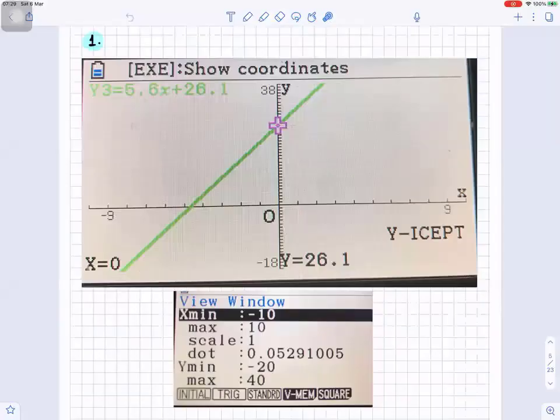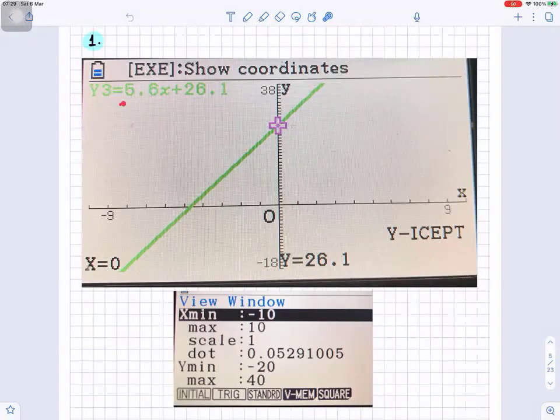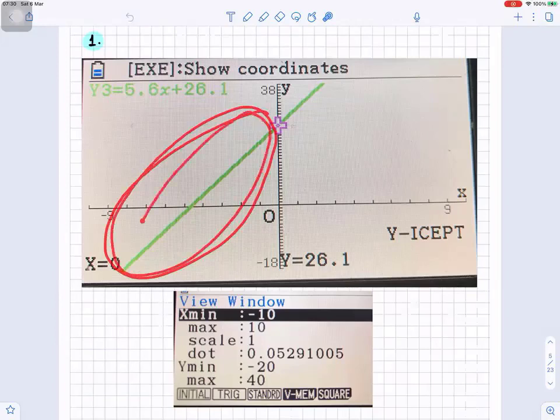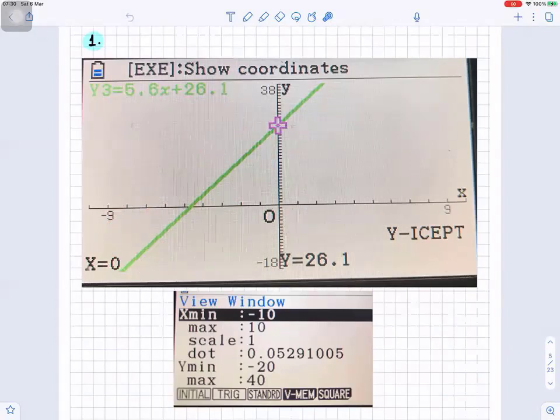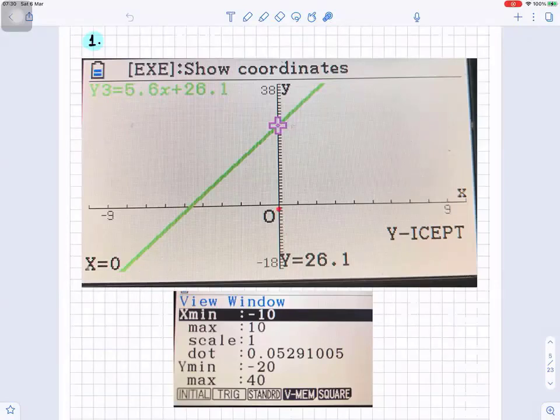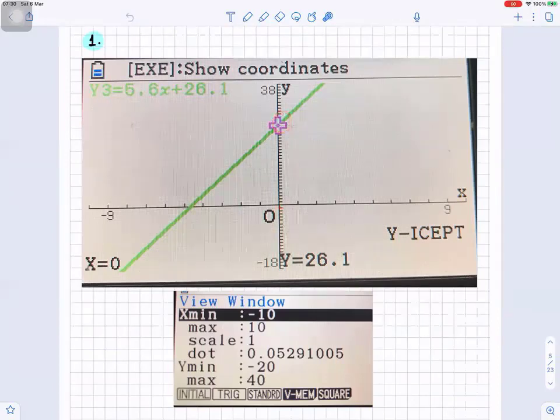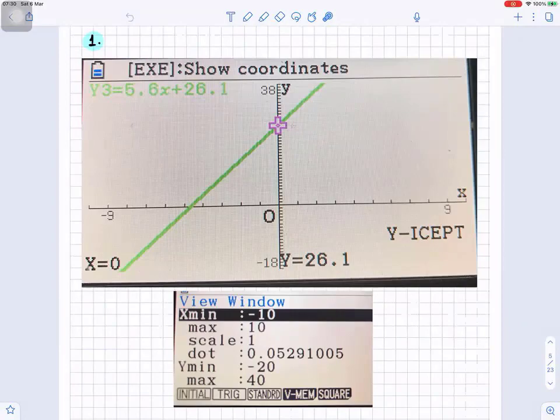And if you were to plot that on the graph, 5.6s plus 26.1, that's what the graph will look like. And we have to ignore the negative side. We start from zero. So if you didn't get any sleep, you will get 26.1 - that will be where you start, the y-intercept. And it keeps increasing. So at time zero, 26.1, and you use that scale. So the graph shows you some more information.